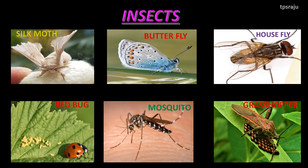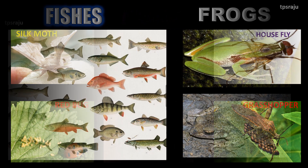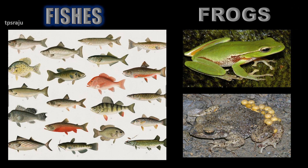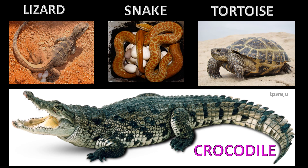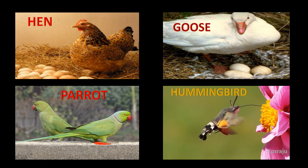Examples of oviparous animals: insects, fishes, frogs, lizards, snakes, tortoise, crocodiles, birds, etc.